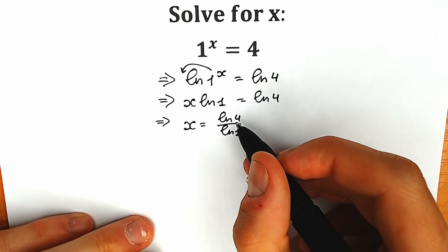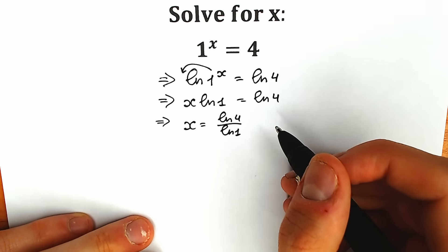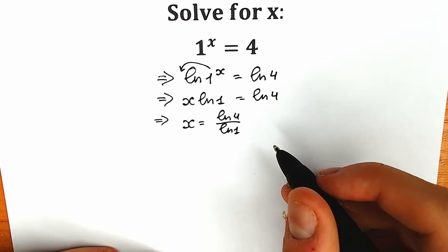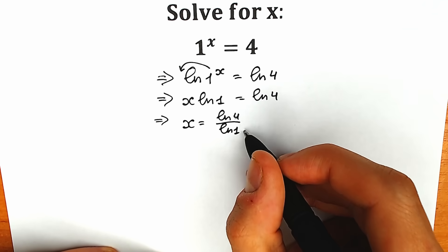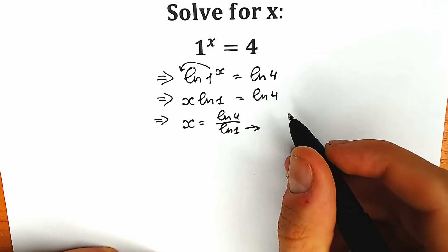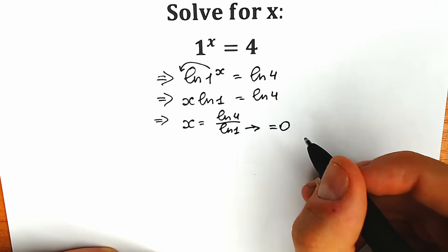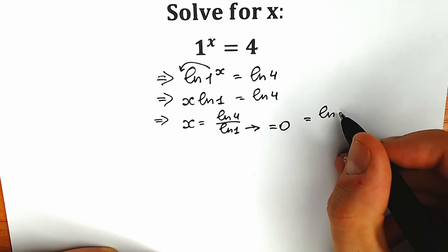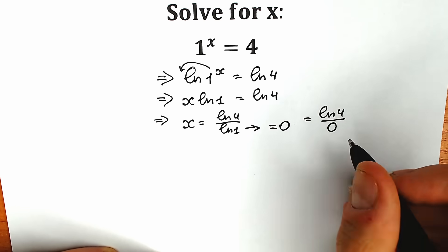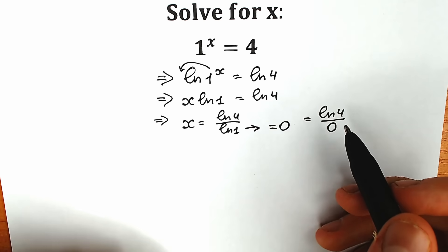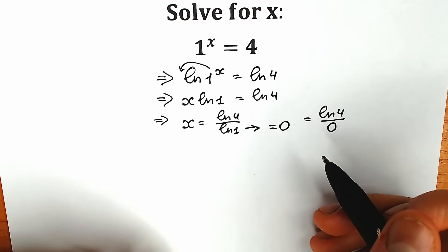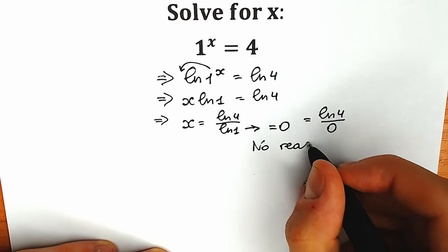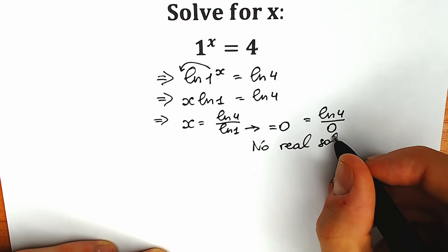Right here is a very tricky moment, because this expression natural log 4 does exist — it's a constant everyone can evaluate with a calculator. But what about our denominator? Natural log 1 is equal to 0. So it changes everything for us, because we can't divide by 0. We have natural log 4 divided by 0. So we don't have a real solution here — no real solutions. Everything is correct.